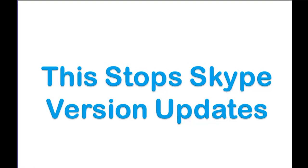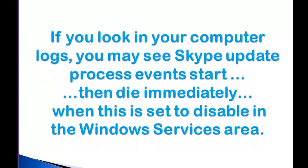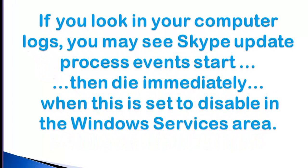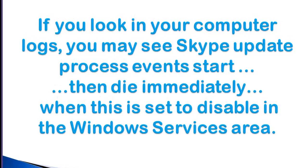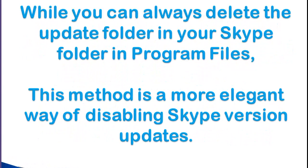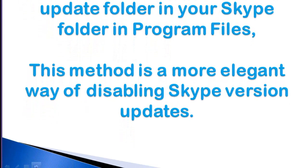This stops Skype version updates. If you look in your computer logs, you may see Skype update process events start then die immediately when this is set to Disabled in the Windows Services area. While you can always delete the update folder in your Skype folder in Program Files or Program Files x86, this method is a more elegant way of disabling Skype version updates.